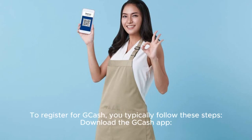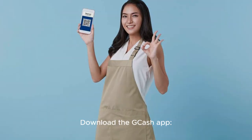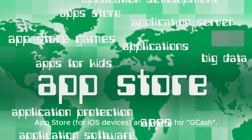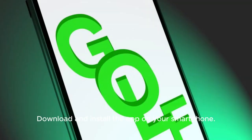To register for Gash, you typically follow these steps. First, download the Gash app. Go to the Google Play Store for Android devices or the App Store for iOS devices and search for Gash. Download and install the app on your smartphone.